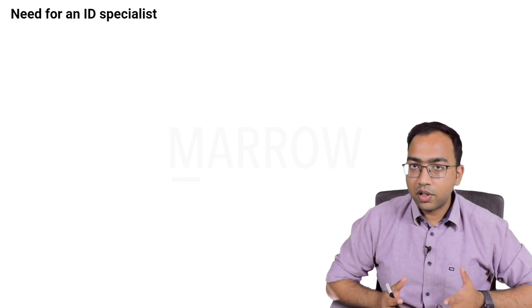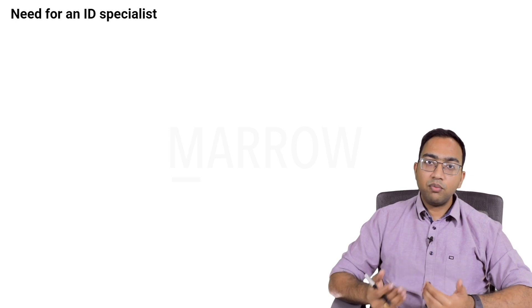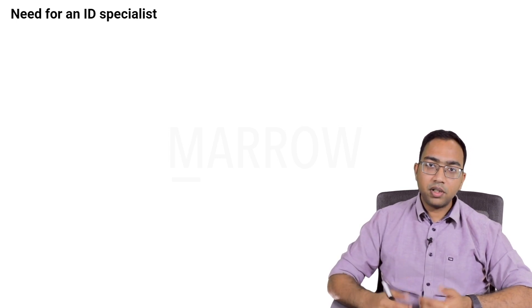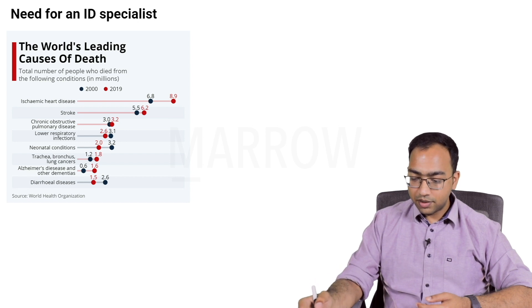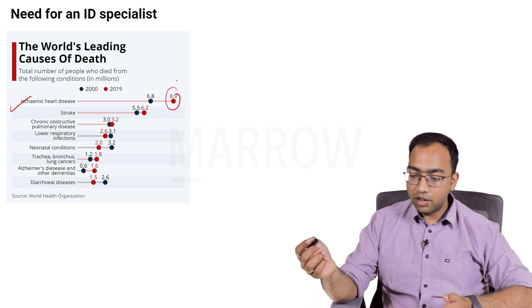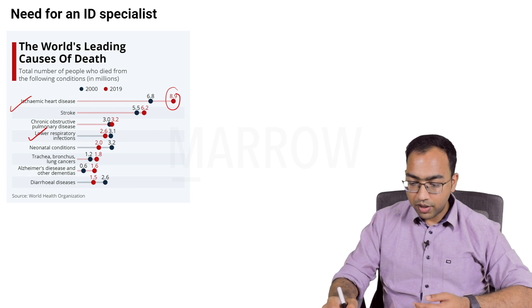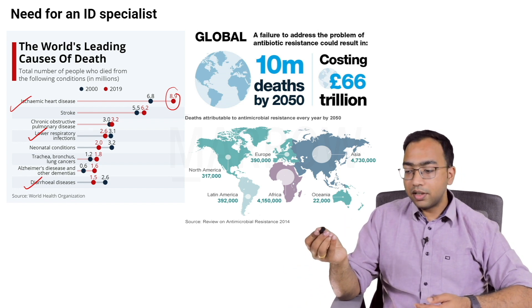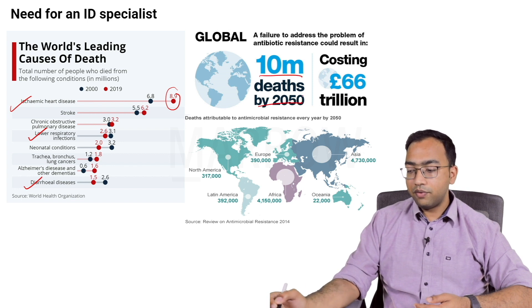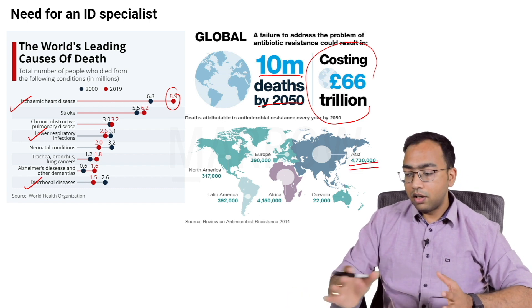The question is: what is the need for an ID specialist? The most important reason is to optimize care. We are seeing more and more drug-resistant organisms, and antimicrobial resistance is increasing at a rapid rate. Looking at the world's leading causes of death — ischemic heart diseases account for almost 8.9 million deaths. However, at the rate antimicrobial resistance is increasing, we can expect 10 million deaths by 2050 with a huge economic burden. Asia is going to account for the highest number of deaths out of these 10 million cases.